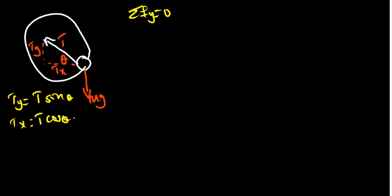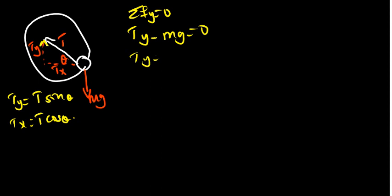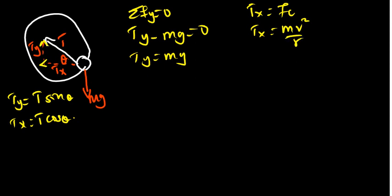The bob is moving in the x-direction, so the forces in the y-direction must sum to zero. We have Ty directed upward minus mg directed downward equals zero, therefore Ty equals mg. For the x-direction, Tx is directed inward toward the center so Tx equals the centripetal force, which is mv squared over r. We can form a right triangle with Tx and Ty to find T.